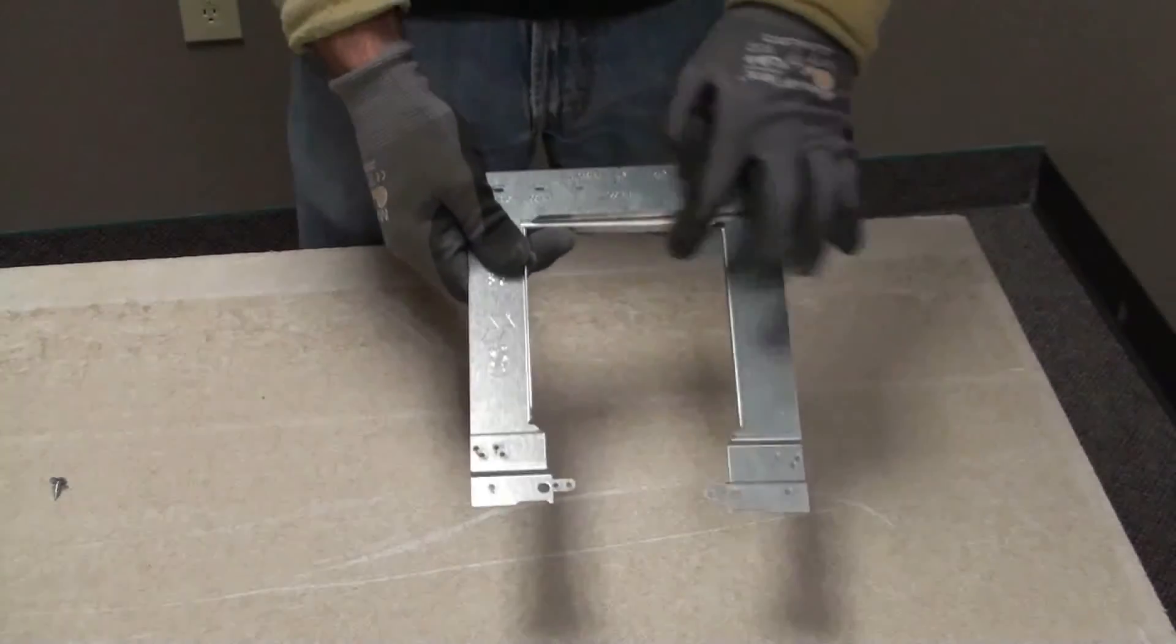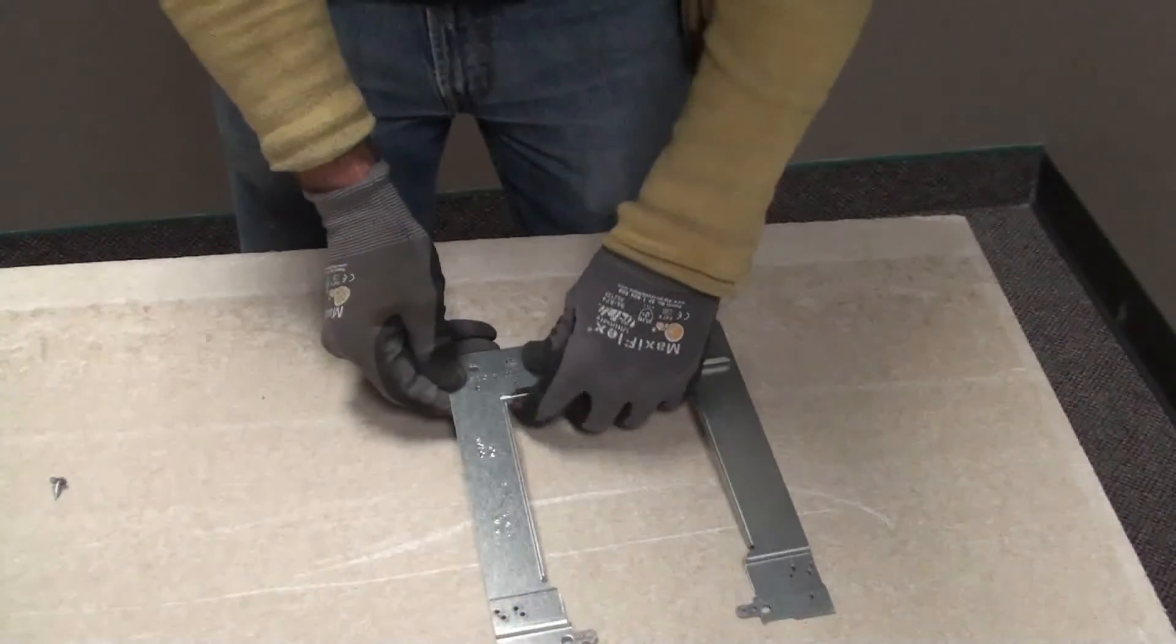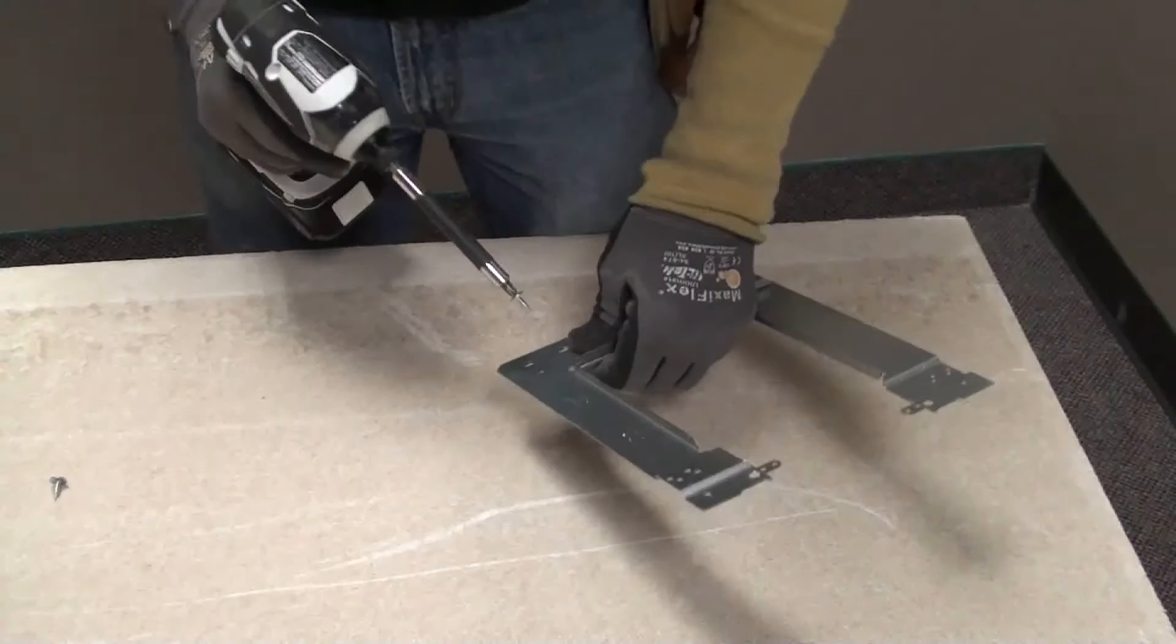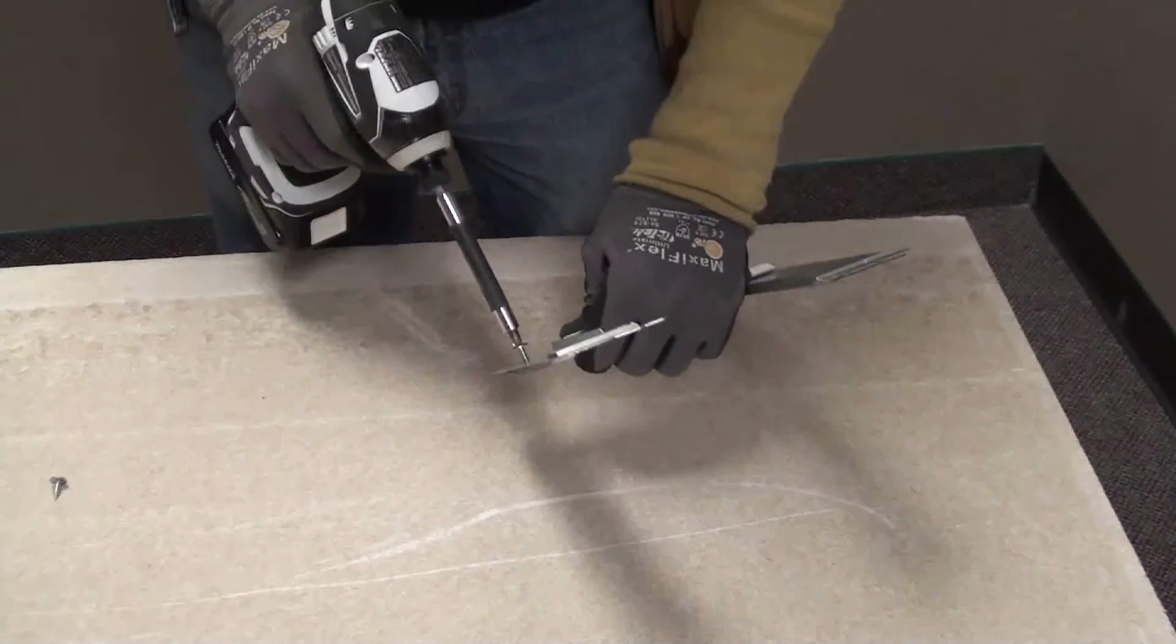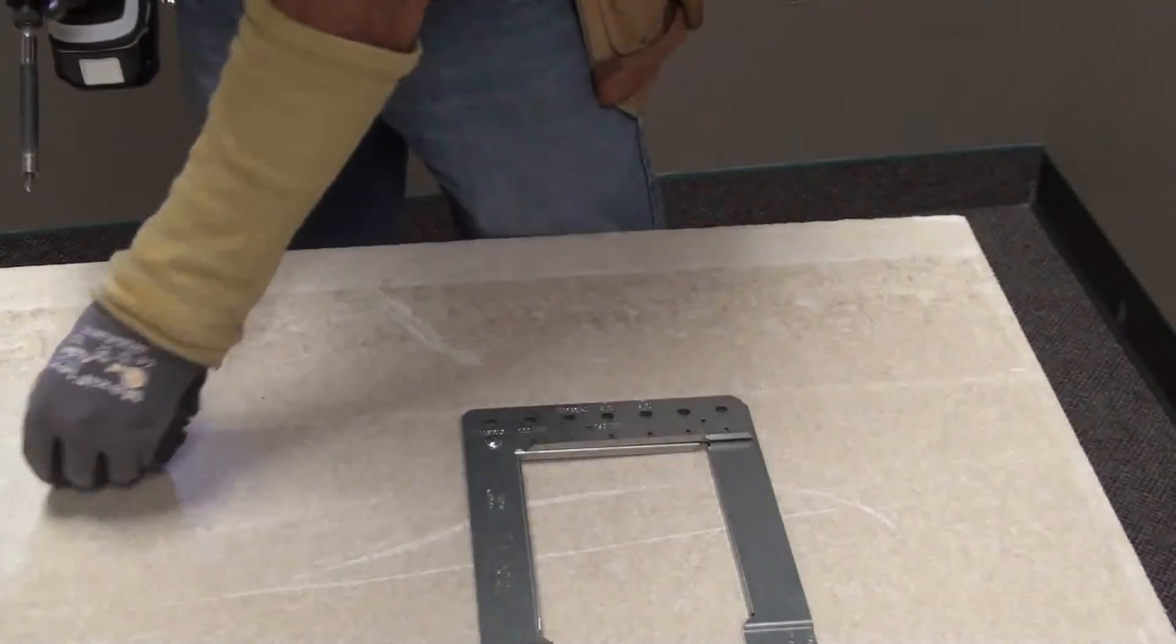For this demonstration, we'll create a 4-inch opening. Using a number 7 screw, attach the two halves together with a minimum of two screws.